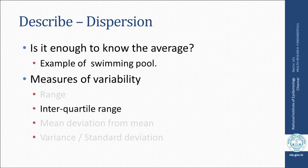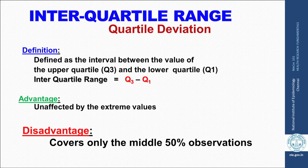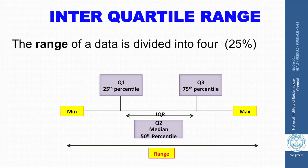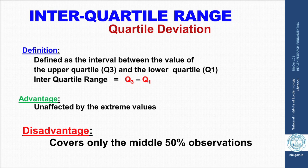Another measure is the interquartile range (IQR), which addresses the problem of extreme values. We divide the dataset into four quarters, remove the first and last quarters, and consider only the middle 50 percent. The IQR is Q3 minus Q1, and its great advantage is that it is not affected by extreme values. However, it covers only the middle 50 percent of values, and like range, it uses only two data points.